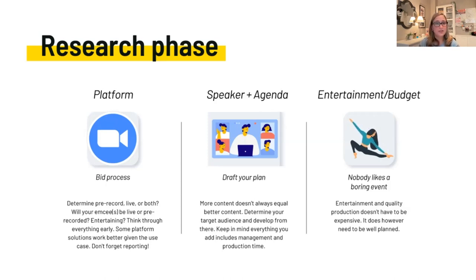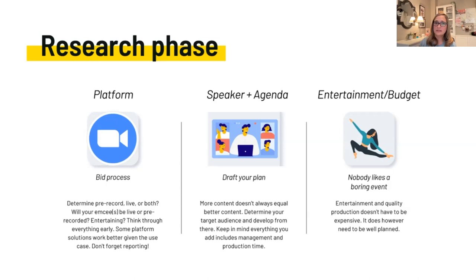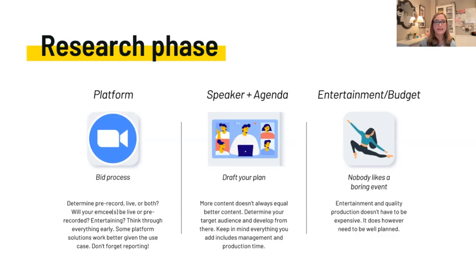With your platform and production — before you do any platform research, I highly recommend you determine what types of sessions you're going to run. Ask yourself: are you pre-recording, going live, or doing both? Will your MC be live or pre-recording with a video editor weaving everything together? How are you doing entertainment? Think through all of it early, because as you go get that bid, I highly recommend creating a spreadsheet checklist of all the things you need — reporting, budget, records — and you're going to need to ask those questions.